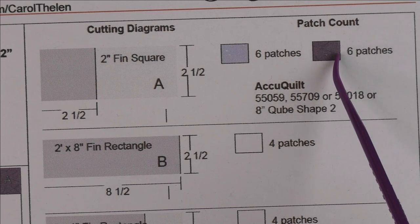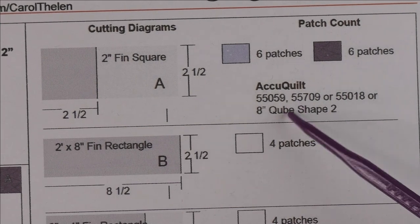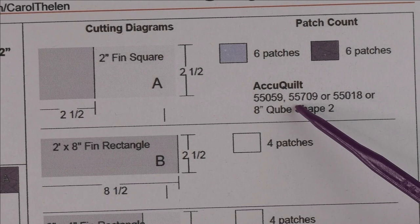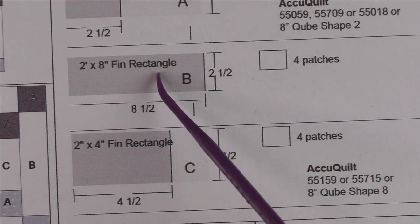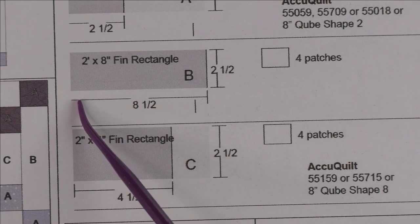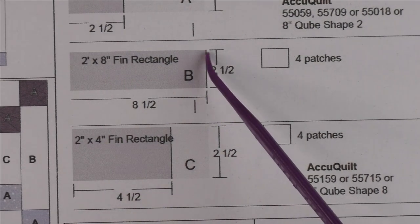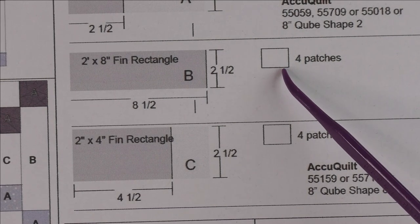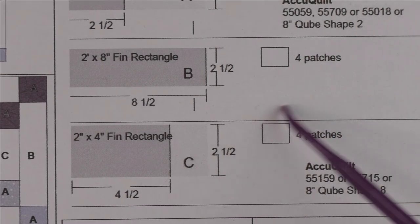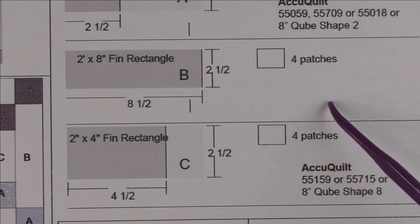Here is your AccuQuilt die if you use AccuQuilt. Patch B is a two inch by eight inch finished rectangle. We're going to cut eight and a half inches by two and a half inches, and we need four patches of the background fabric. There is no AccuQuilt die that I could find for this.